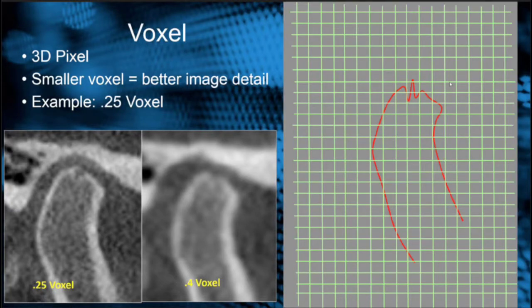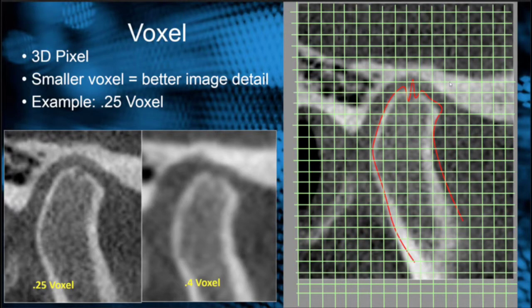If we do the same scan and we do 0.25 voxel, you can see the picture element is much tighter. The boxes are much smaller, and therefore we're going to get much more detail than we would in a larger voxel scan. When we superimpose the x-ray over it, you can see the area of interest is going to give us the detail.